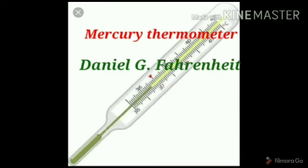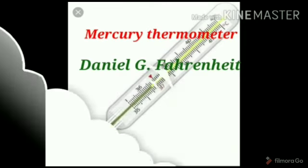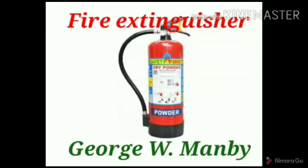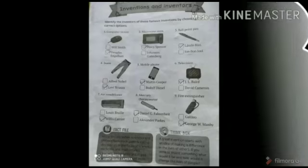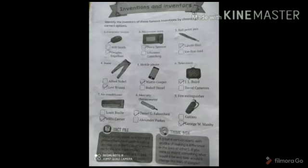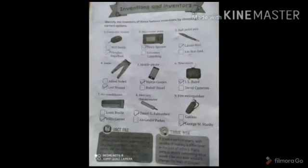Number seven: air conditioners. Air conditioners were invented by Willis Carrier. Number eight: mercury thermometer. It was invented by Daniel G. Fahrenheit. Number nine: fire extinguisher. It was invented by George W. Manby. So children, hope you understood this lesson. Now you have to complete this work in your book with the help of this video.